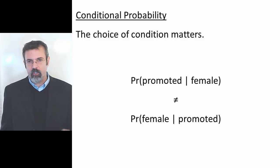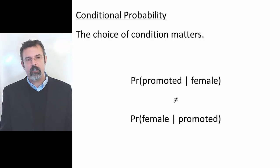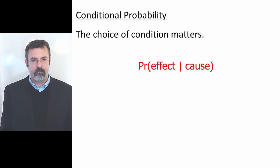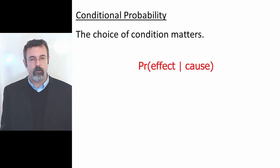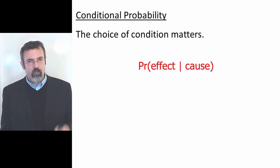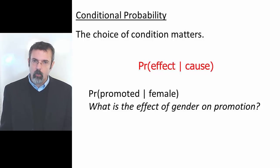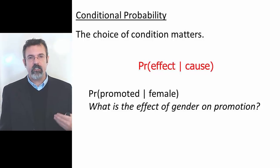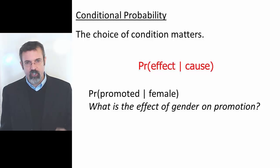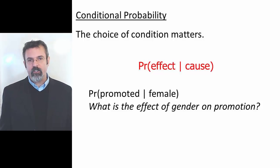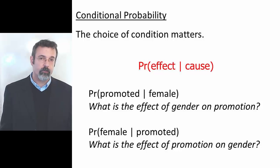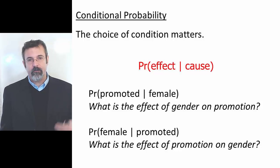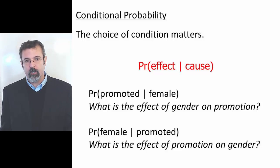In thinking about conditional probabilities, it helps to think about cause and effect. The cause is the conditional part of the probability. For example, when we talk about the probability of being promoted given that you are female, we are asking what is the effect of gender on promotion. But when we talk about the probability of being female given that you are promoted, we are asking what is the effect of promotion on gender.